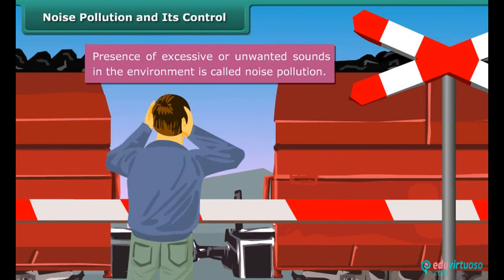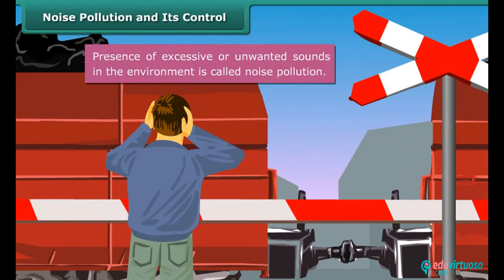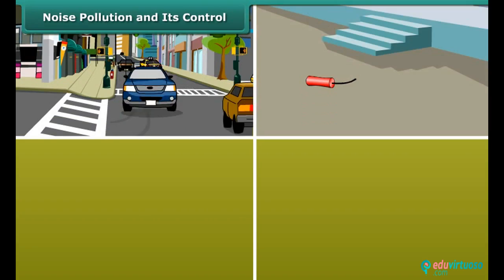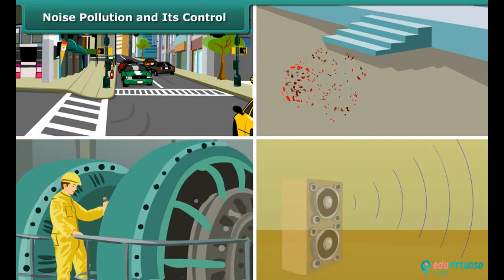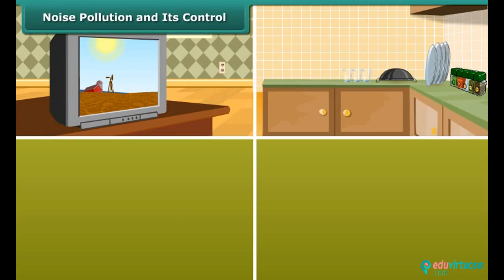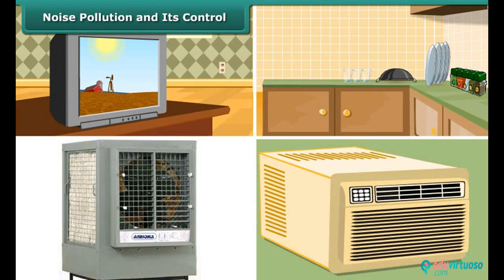Noise pollution and its control. Presence of excessive or unwanted sounds in the environment is called noise pollution. The major cause for noise pollution is sounds of vehicles, explosions including bursting of crackers, machines, loudspeakers, etc. Television and transistor radio at high volumes, some kitchen appliances, desert coolers, air conditioners all contribute to noise pollution.